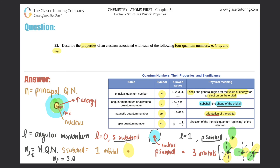Last but not least is ms, the spin quantum number. This specifically talks about how the electron is spinning. There are only two directions an electron can spin — upward or downward. If an electron is spinning upward it always has the value of positive one-half; if spinning downward, it has negative one-half. So ms tells you the spinning direction of the electron — upward or downward.